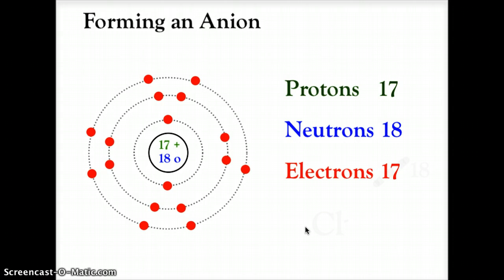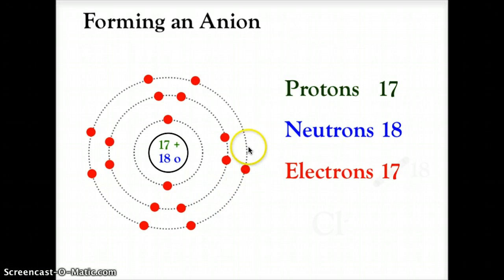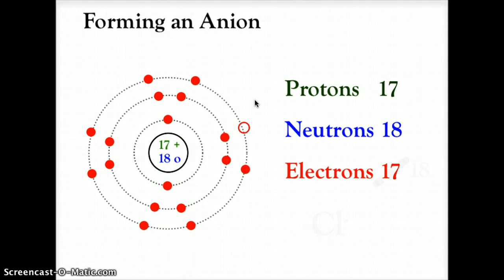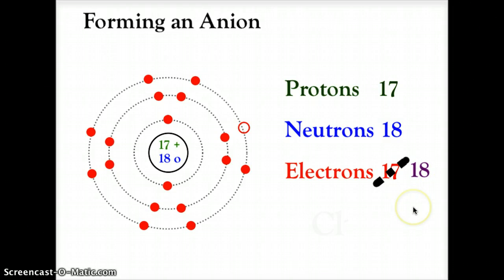Here we have a chlorine atom with 17 protons, 18 neutrons, and 17 electrons: 2 in the first orbit, 8 in the second orbit, and 7 in the third orbit. That third orbit is missing one electron, so the extra electron that sodium gave away will gladly be picked up by chlorine. When chlorine adds that extra electron, it changes to 18 electrons — one more negative than positive — making it a negative −1 anion.